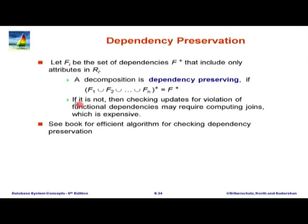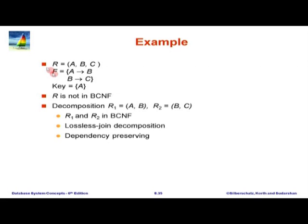This same example: decomposing into AB and BC is BCNF, lossless join, and dependency preserving. Now let us come back to how to check for BCNF. If you have one relation and a set of functional dependencies, there is a simplified test. We should check every functional dependency in F+, but F+ is huge. So the first question is: for an initial schema R and a set of functional dependencies F, does it suffice to check only F for violation of BCNF?